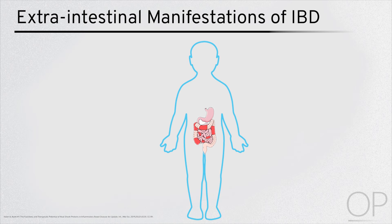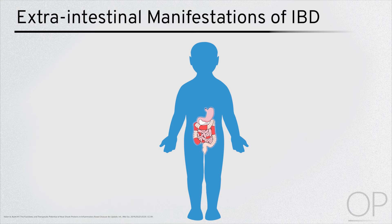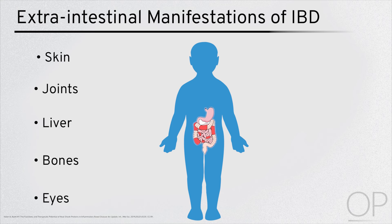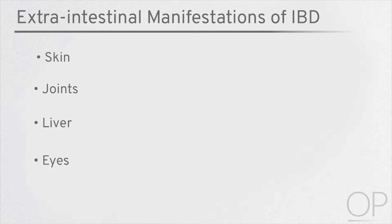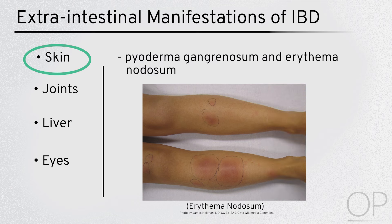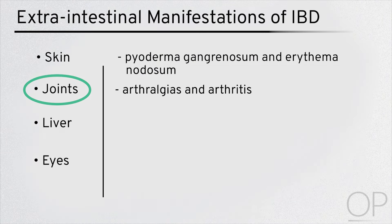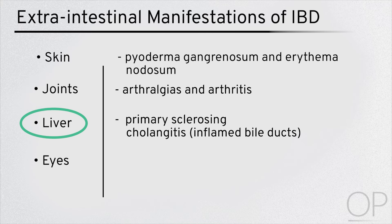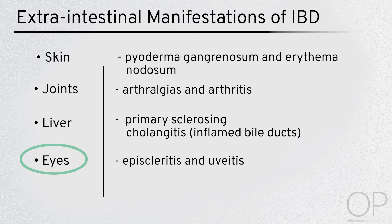Patients with IBD can also experience manifestations of their disease beyond the intestine, with skin, joints, liver, bones, and eyes being among the organ systems sometimes affected. Examples of skin manifestations include pyoderma gangrenosum and erythema nodosum. Joint manifestations include arthralgias and arthritis. Liver manifestations can include primary sclerosing cholangitis, which is inflammation of the bile ducts. Eye manifestations can include episcleritis and uveitis.